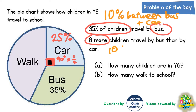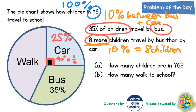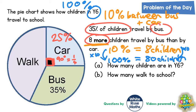This 10% difference is actually equivalent to 8 children, because we're told that 8 more children travel by bus than by car. So 10% must be worth 8 children. Now if 10% is worth 8 children, the total for the whole of Year 6 would be 100%. To get from 10% to 100% you multiply by 10, which means we make 8 children 10 times bigger. 8 times 10 is 80 children, so there must be 80 children in Year 6.